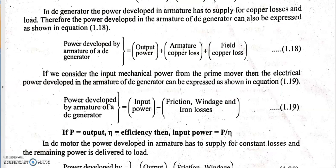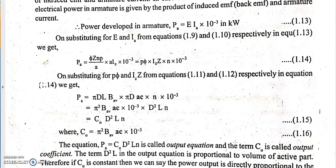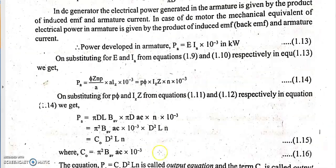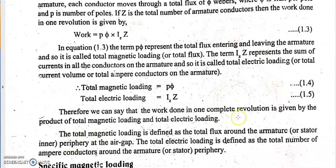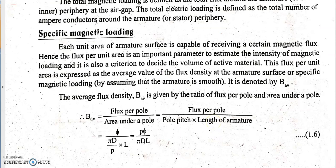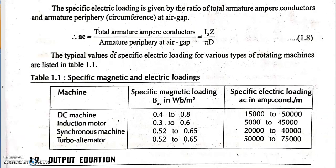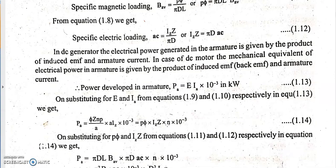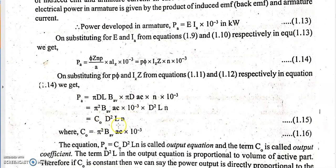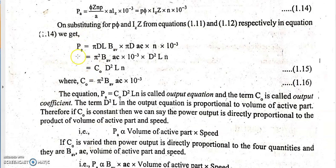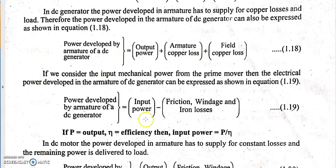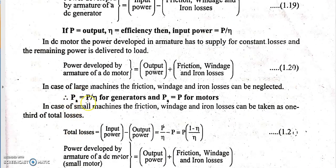In today's video lecture we discussed the construction of a DC machine, the equations for total and specific electric and magnetic loading, and the output equation of a DC machine in two forms. From the output equation we separate D²L to find the main dimensions of the armature, and the alternative PA expressions are used depending on whether the machine is small or high capacity. Thank you for listening.